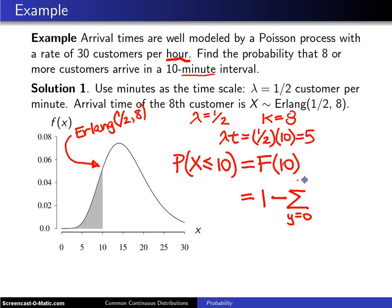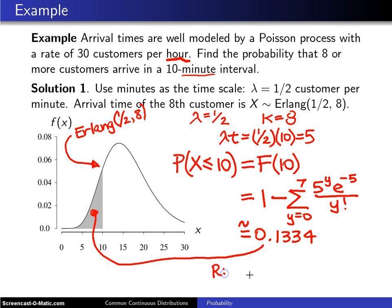If you go back a couple of slides for the Erlang distribution, you'll notice this is written as 1 minus the sum from y equals 0 up to 7 of 5 to the y times e to the minus 5 divided by y factorial. When you work that out, that turns out to be approximately 0.1334.